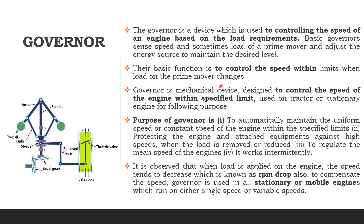Now, how does it do this? The governor is a mechanical device used to control the speed of the engine within the specified limit. Two or three types of mechanical devices are fitted, through which it controls the speed according to the load. The purpose of the governor is to automatically maintain the uniform, constant speed of the engine within the specified limits — that is the first function.